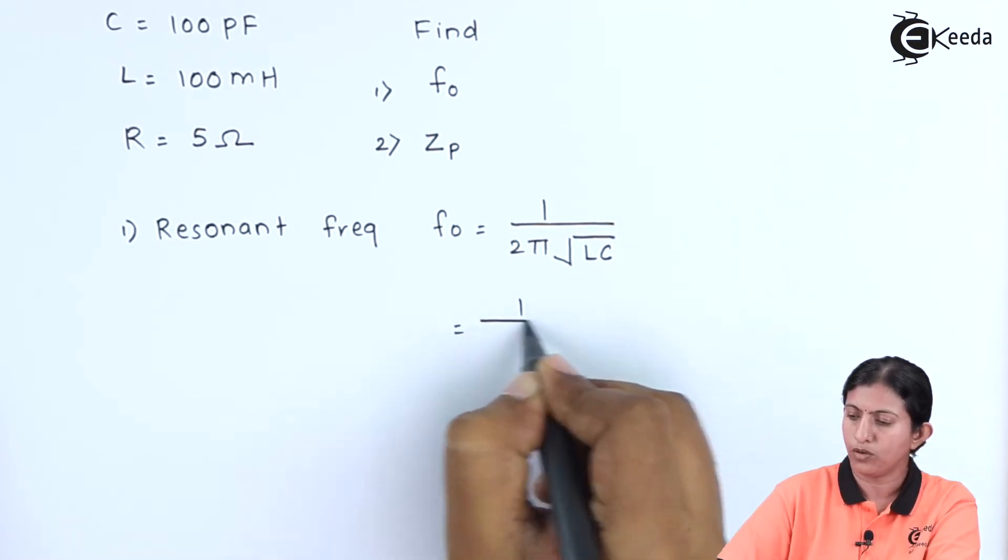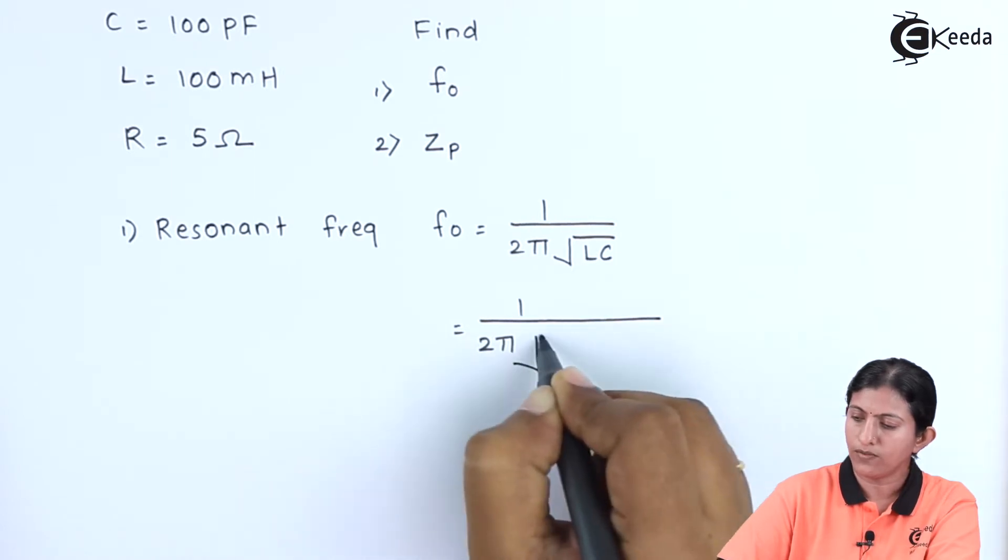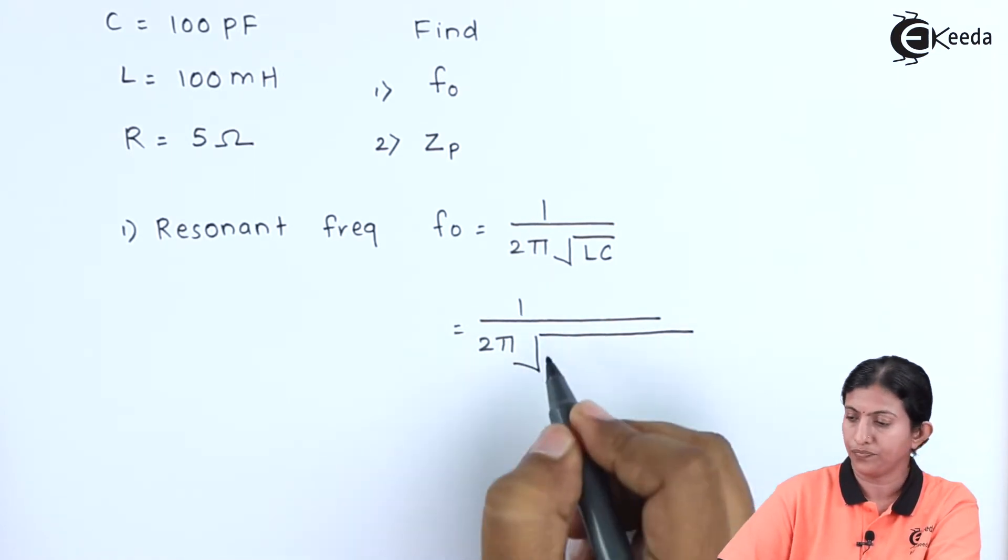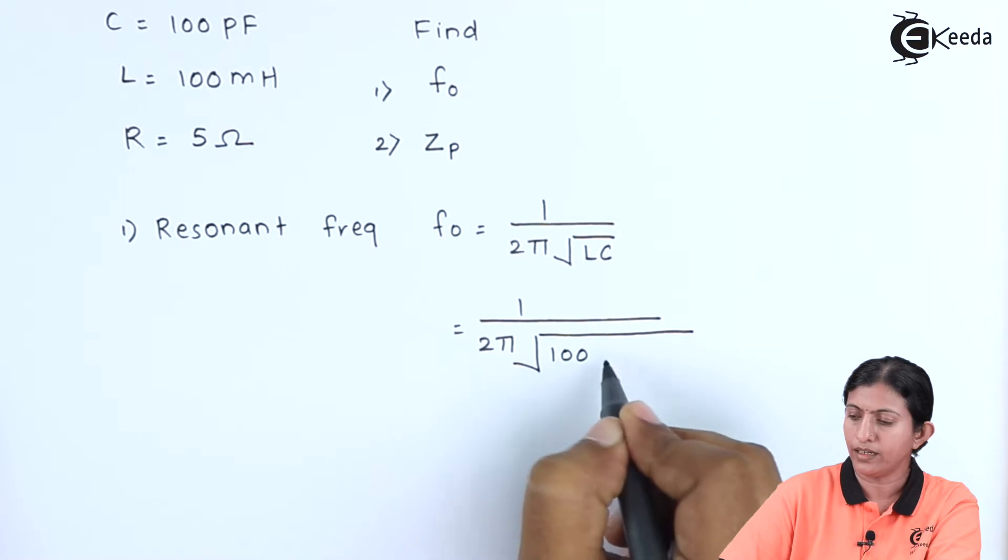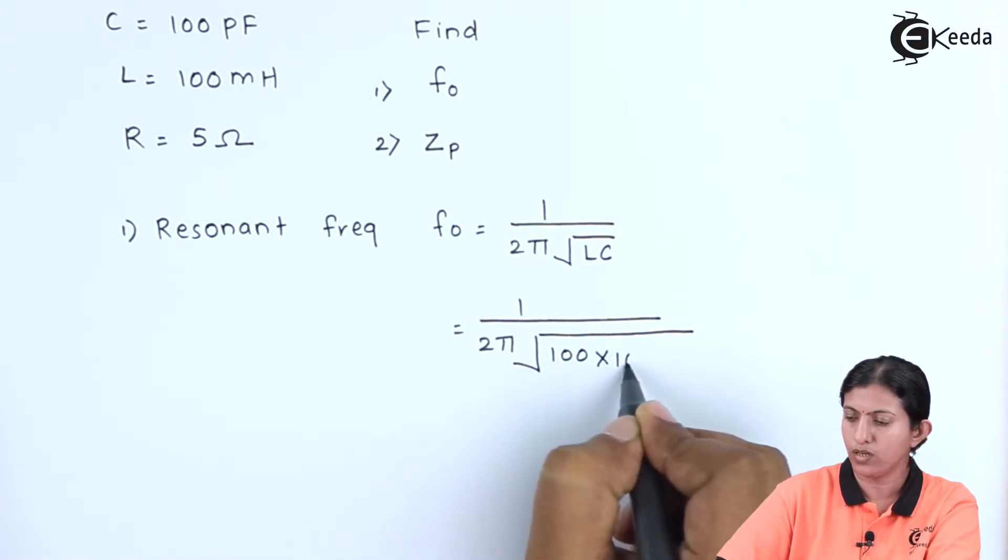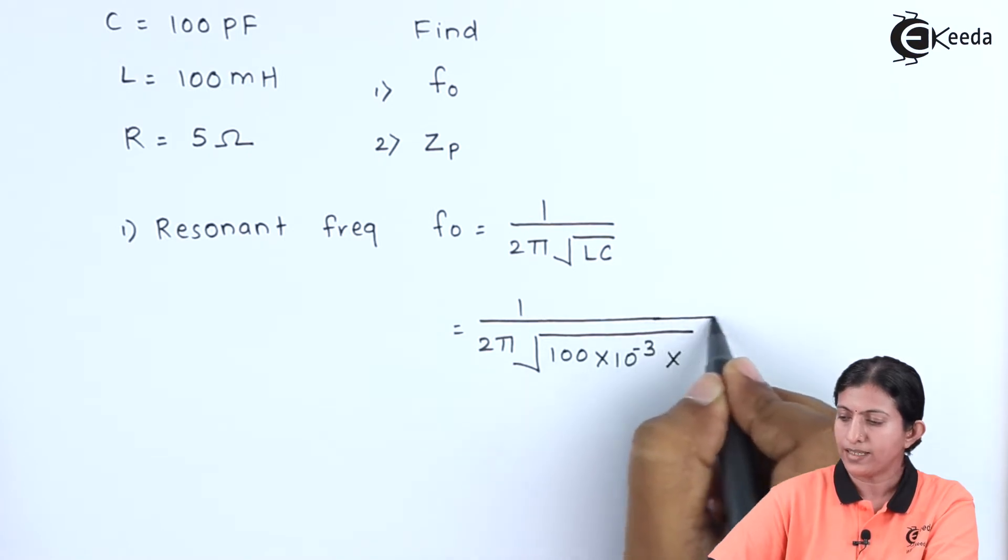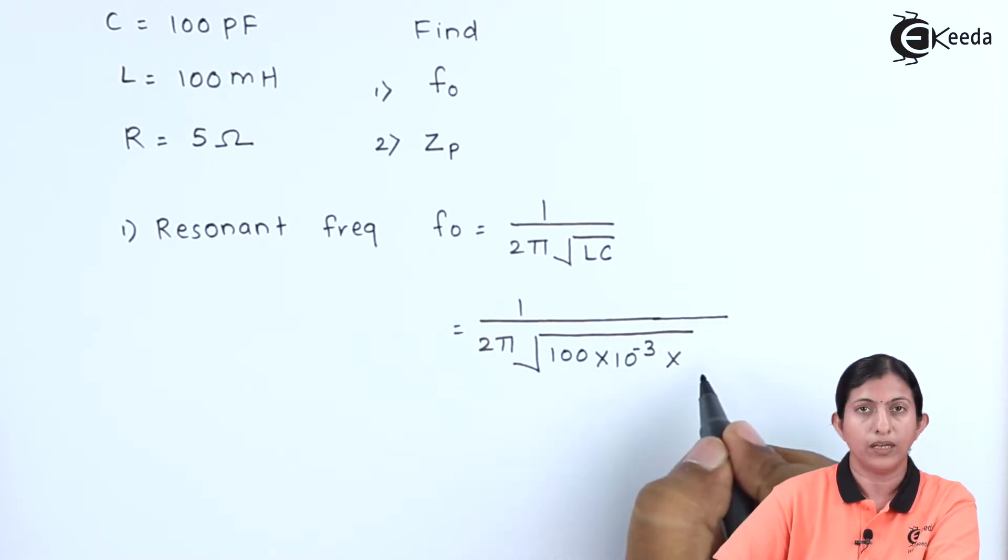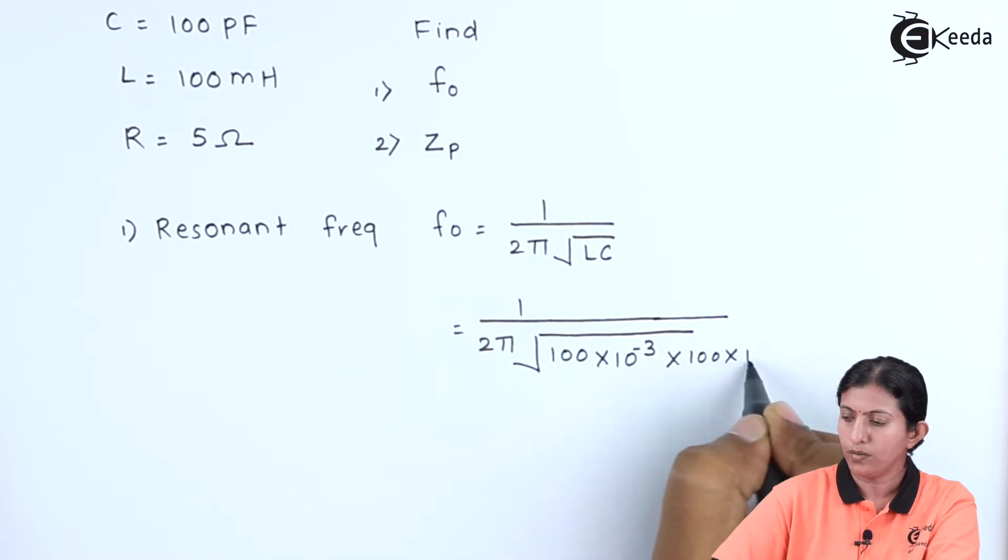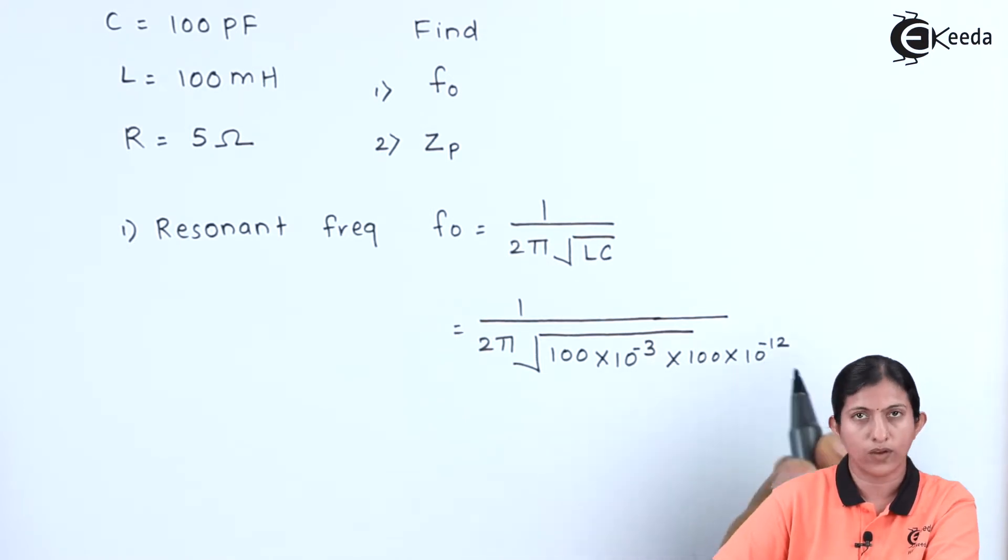So 1/(2π), we are substituting the value of L and C. L is 100 mH, so 100 × 10⁻³, and the capacitor is 100 pF, so 100 × 10⁻¹².